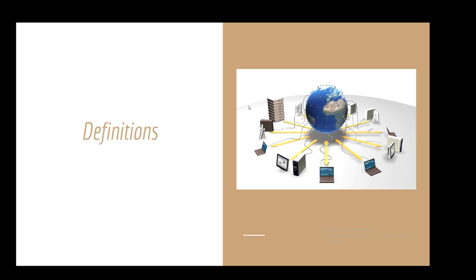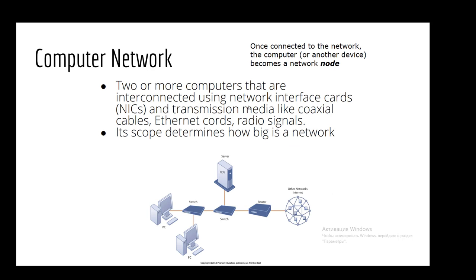Our first part of today's lecture is devoted to definitions. In today's lecture we get acquainted with several definitions and one of the most important definitions is computer network. Computer network is two or more computers that are interconnected using network interface cards and transmission media like coaxial cables, Ethernet cords, and radio signals. Main function of computer network is that its scope determines how big is a network.